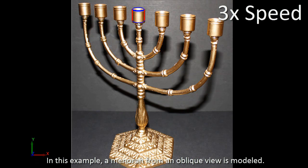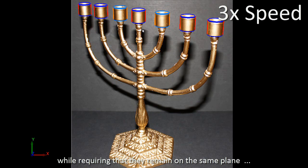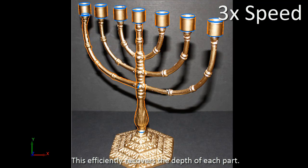In this example, a menorah from an oblique view is modeled. We copy and paste the candle holders by fitting them to the image, while requiring that they remain on the same plane and their sizes remain unchanged. This efficiently recovers the depth of each part.